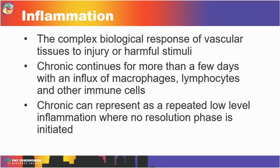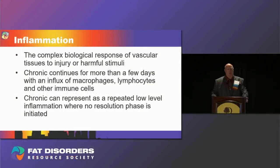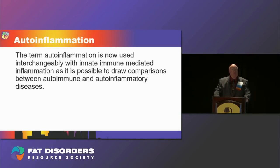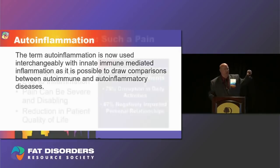One way chronic inflammation can present is as a low-grade, low-level type of inflammation that persists without ever reaching a resolution phase — that's the type present in obesity-related adipose tissue inflammation. The term auto-inflammation can be used interchangeably with innate immune-mediated inflammation, because it is now possible to draw comparisons between autoimmune and auto-inflammatory diseases. So Dercum's disease could actually be considered an auto-inflammatory disease.